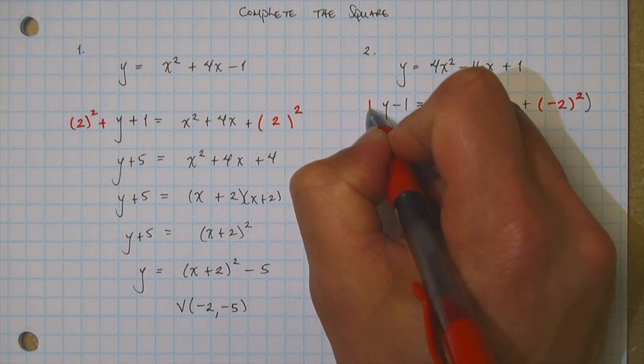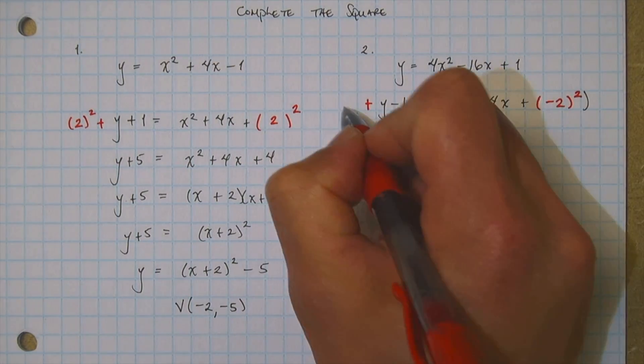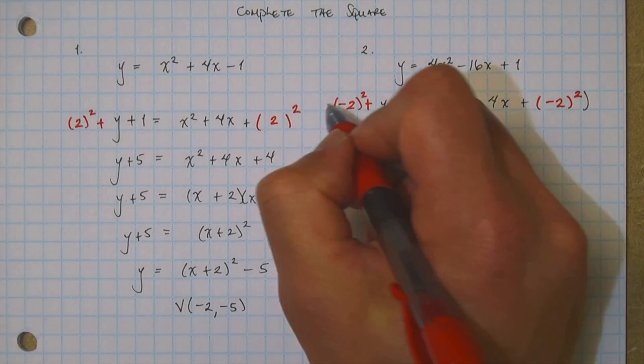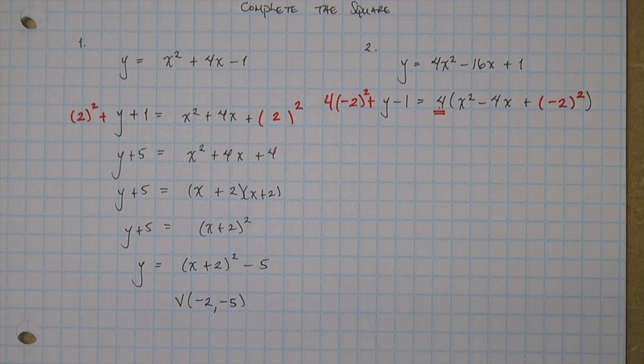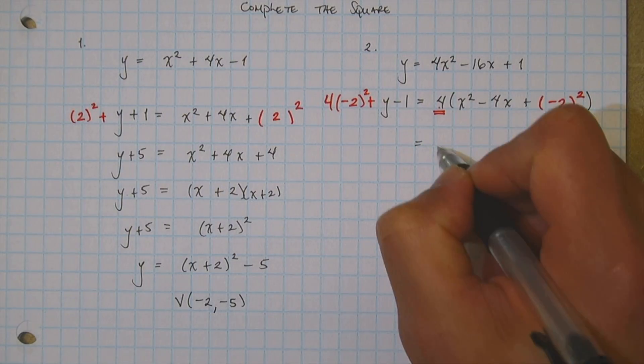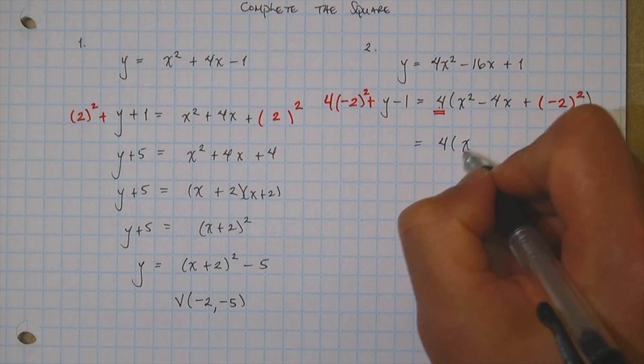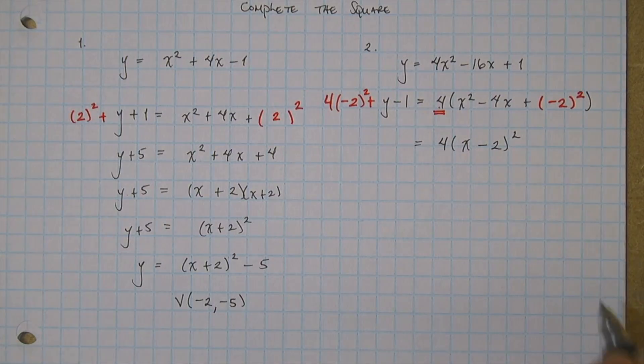So what you have to do, you have to add this guy, which is a negative 2 squared, but also this multiplier here, that 4. So what does that become? Well, let's bring down our 4. Well, this guy here, I can factor out easily. It's going to become x minus 2. That's going to be my square.